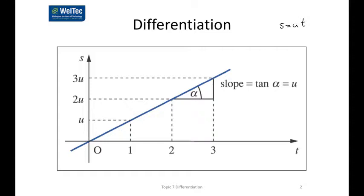This is a special case where the velocity is constant and the distance travelled is a linear function of time. Even when velocity does vary with time, it's still given by the gradient of the distance-time graph. With a straight line we can find the slope by using the tangent, but we need another technique for finding the slope at a point on a non-straight line.